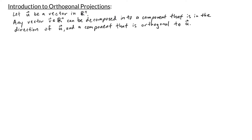The setup is this: let u be a vector in Rn. Then for any vector v in Rn, we can break it down into two components — one component that is in the direction of u, and another component that is orthogonal to u.